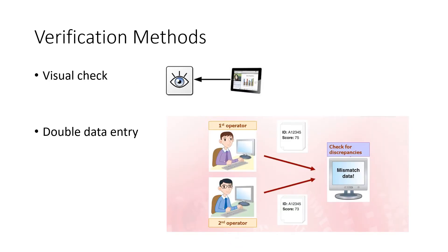The most common verification methods are a visual check — often your data gets inputted and they send it back to you with an email saying please check these details are correct. Or we can do double data entry, where you have two operators typing in data instead of only one, and if their data does not match we know there's an error. You've also seen this with inputting your password on certain websites — if your two passwords don't match then you've made an error.